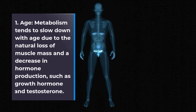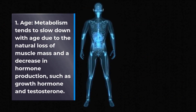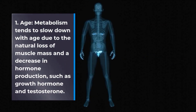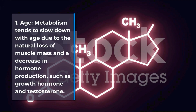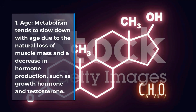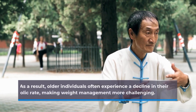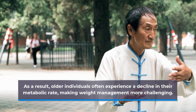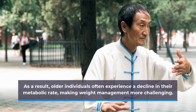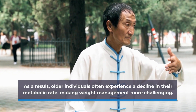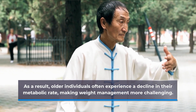1. Age. Metabolism tends to slow down with age due to the natural loss of muscle mass and a decrease in hormone production, such as growth hormone and testosterone. As a result, older individuals often experience a decline in their metabolic rate, making weight management more challenging.